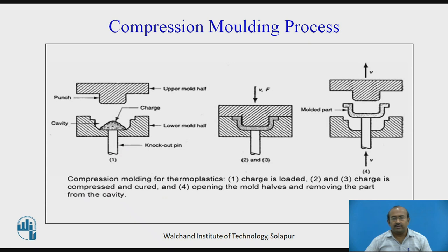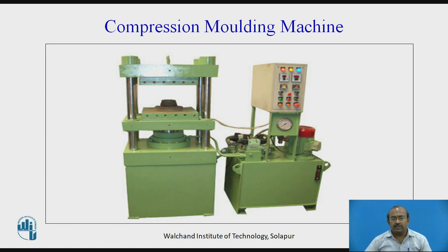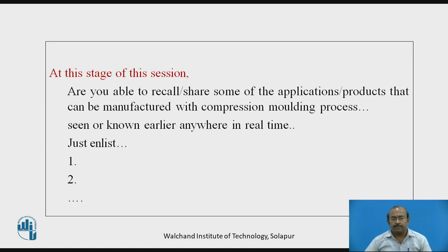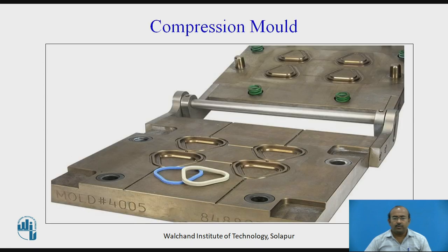If we see in three stages, the compression molds look like this. In the first stage, charge is loaded. Second, the compression force is applied. In the third stage, the finished product is ejected. The compression molding machine looks like this. Are you able to recall and share some of the applications or products that can be manufactured with the compression molding process — earlier seen or known somewhere in real time? Just enlist. Thank you. I hope that you had enlisted the varieties of products that can be manufactured with the compression mold. This is exactly how the compression molds look like — the finished products are placed on the mold which were manufactured with the same mold.